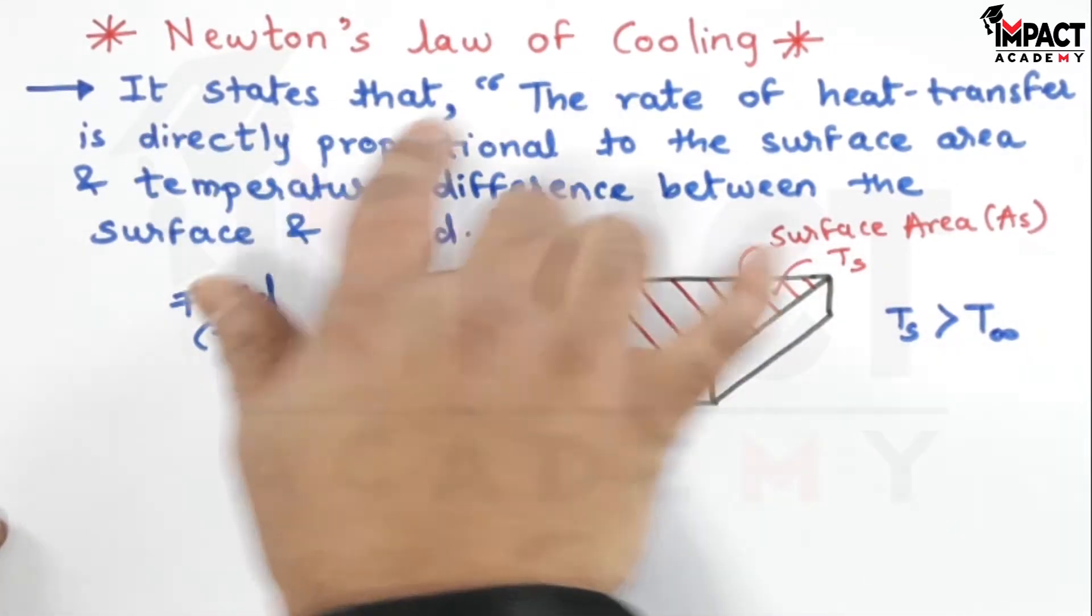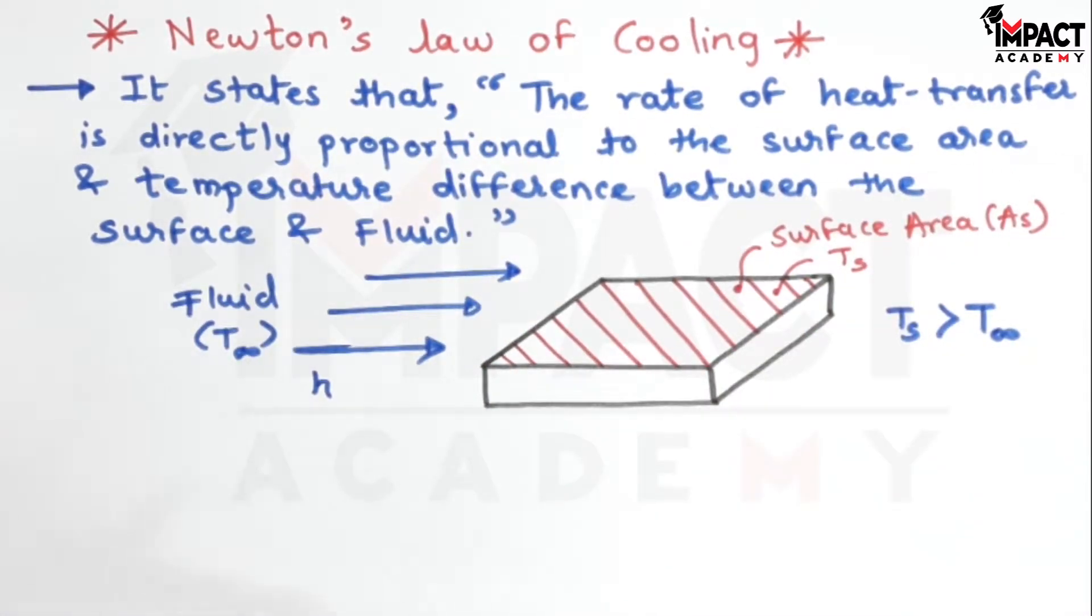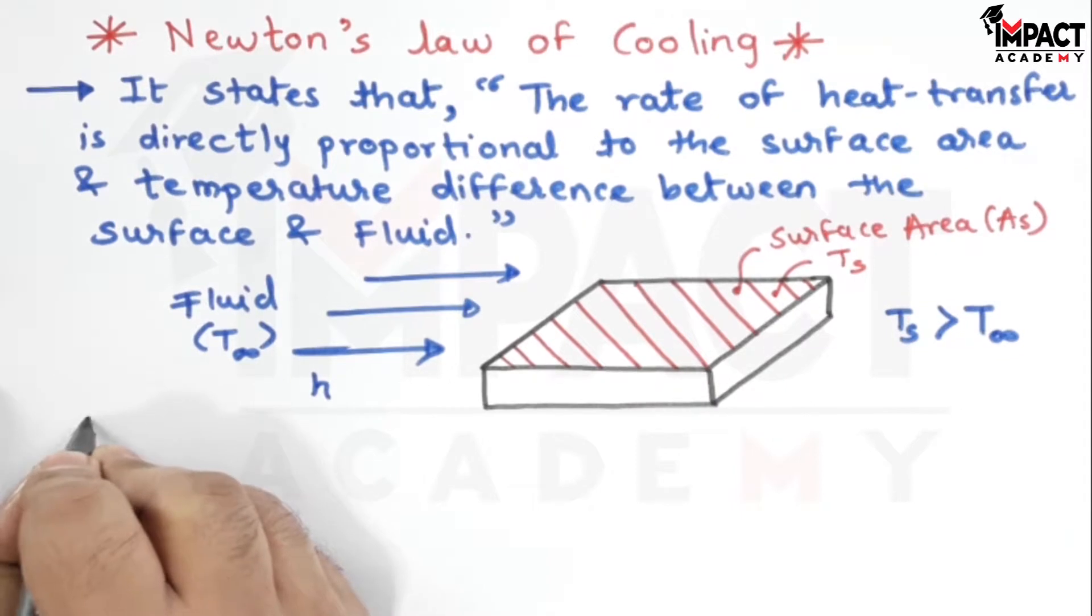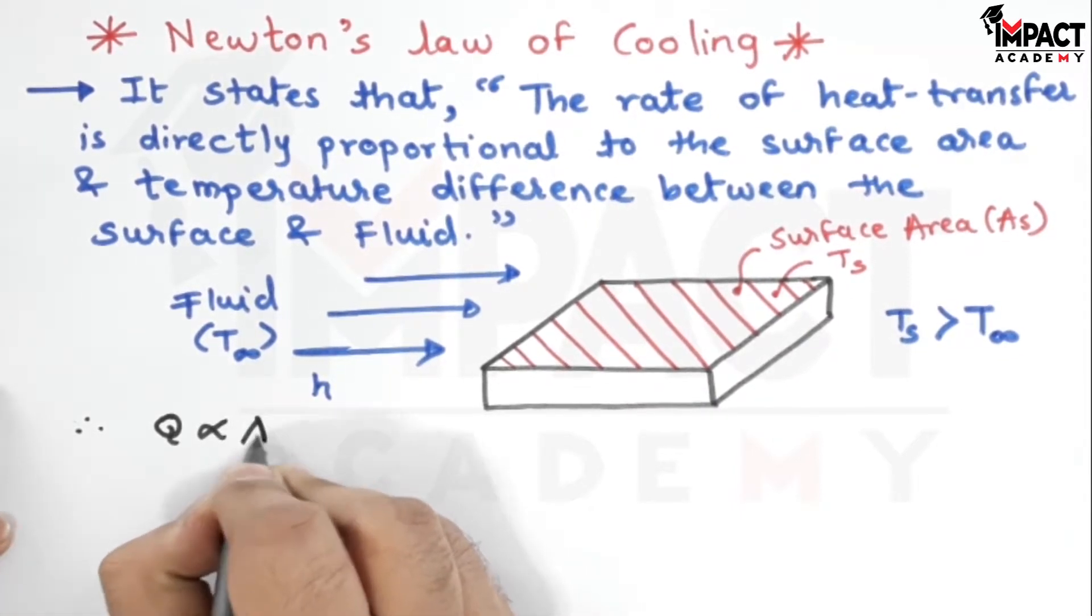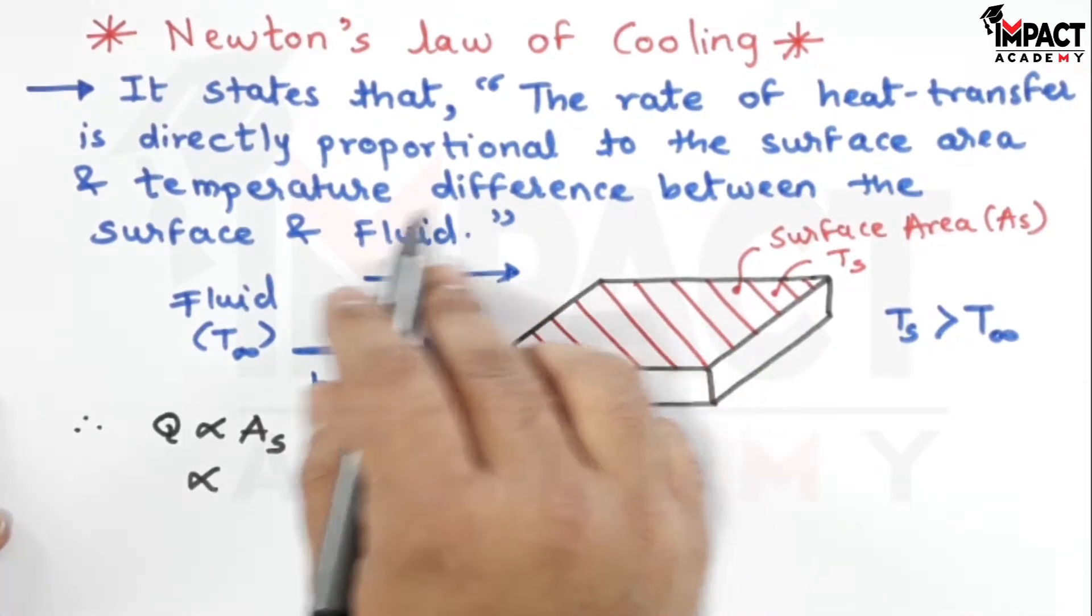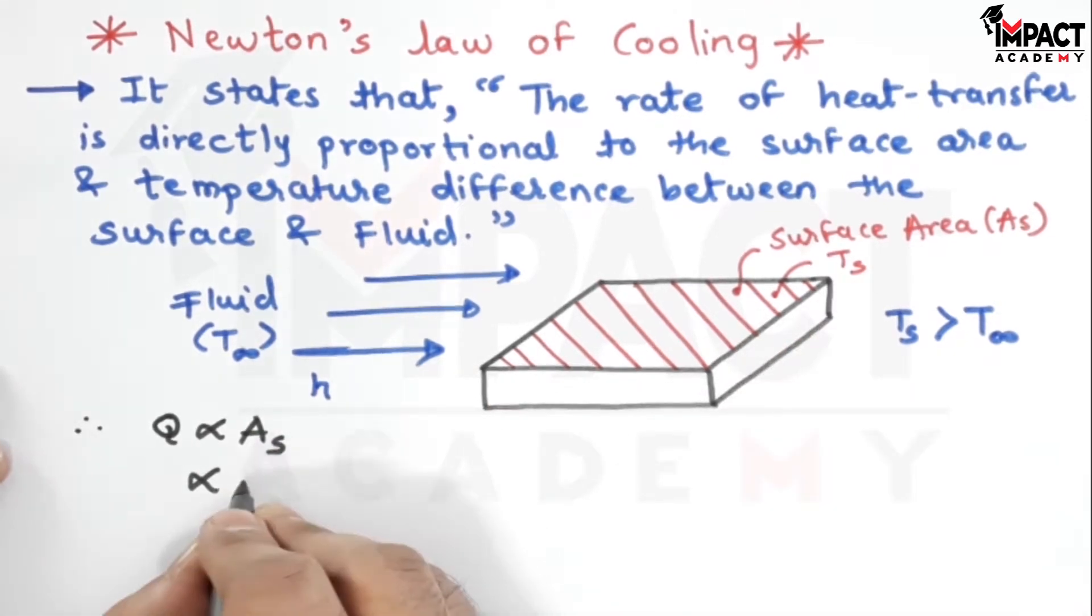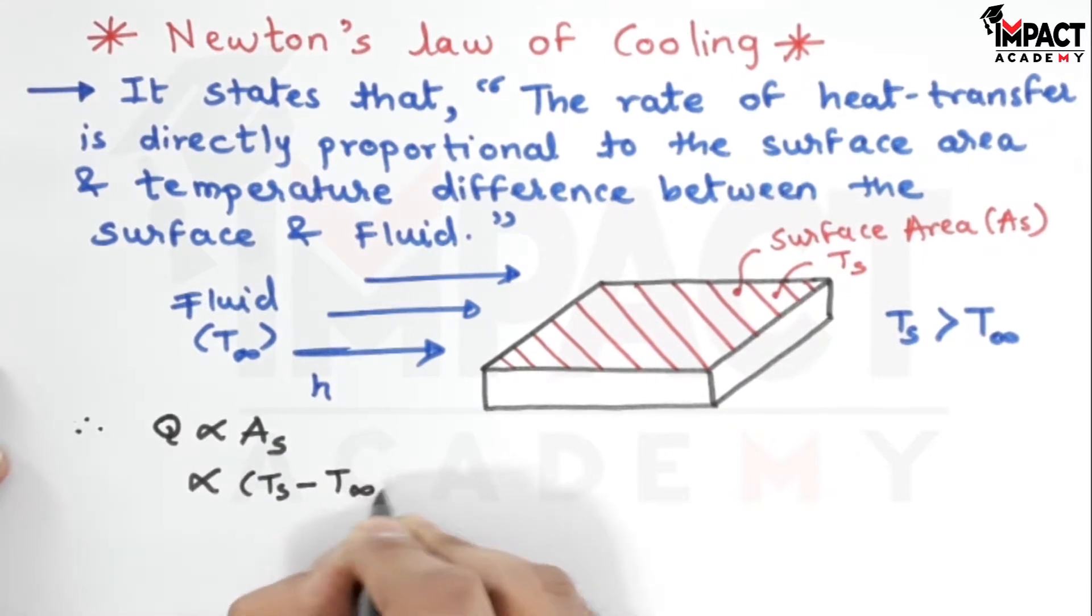Now, Newton's law of cooling states that the rate of heat transfer is directly proportional to the surface area. So therefore, Q, the rate of heat transfer is directly proportional to the surface area and it is also directly proportional to the temperature difference between surface and fluid. Surface temperature is T s, fluid temperature is T infinity.